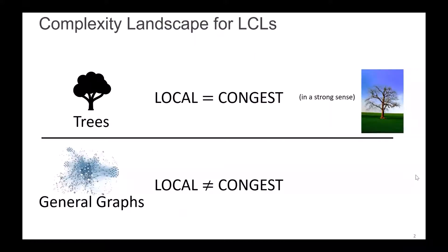Let me summarize our results on one slide. We show that the complexity landscape for LCLs — locally checkable labeling problems — in the LOCAL model and in the CONGEST model is the same if restricted to tree topologies, and the same here really means in a strong sense. If you take any LCL problem on a tree and determine its complexity in the LOCAL model, its asymptotic complexity is going to be exactly the same in the CONGEST model. Secondly, we show that this is not the case for general graphs: there exists a problem with a much smaller complexity in the LOCAL model than in the CONGEST model.